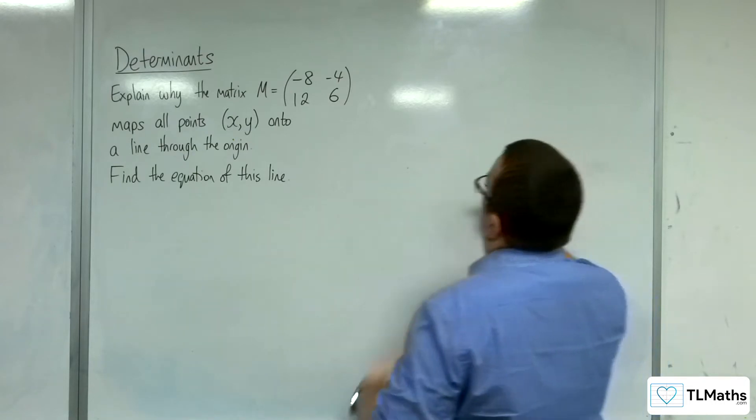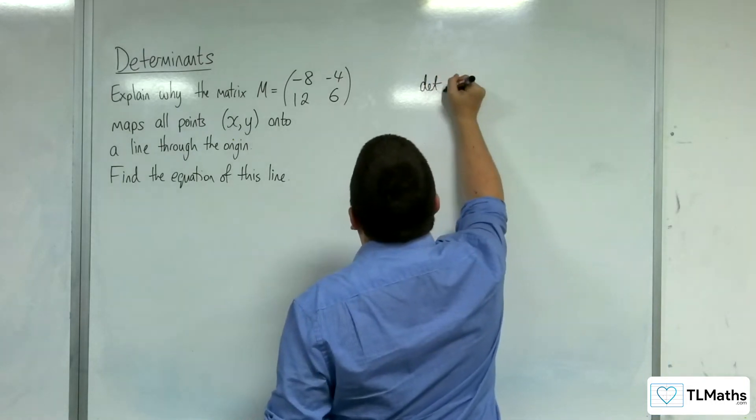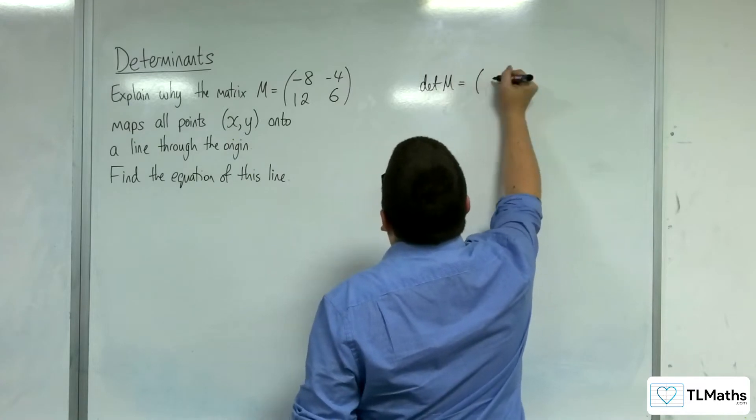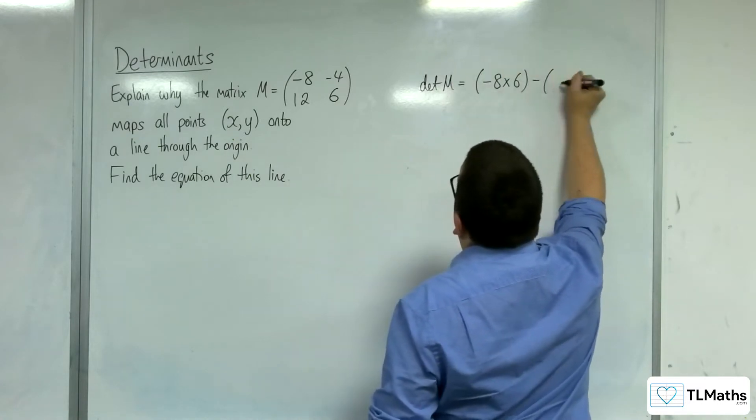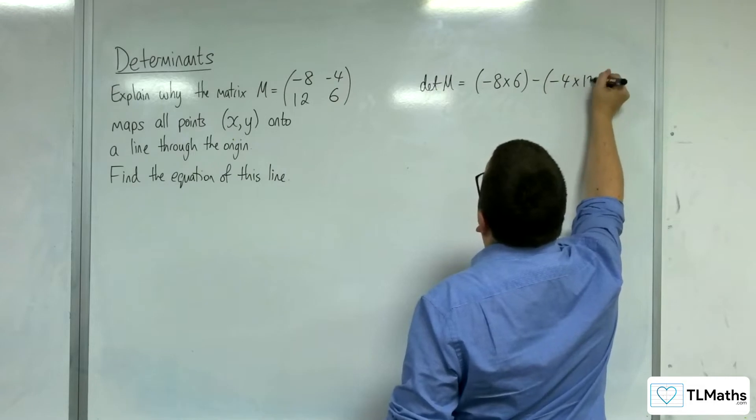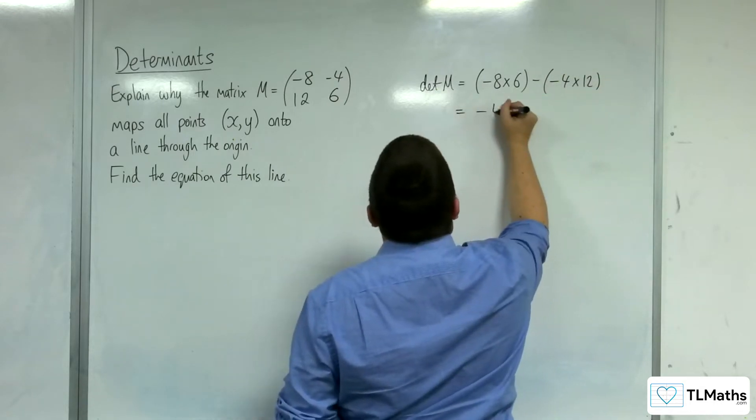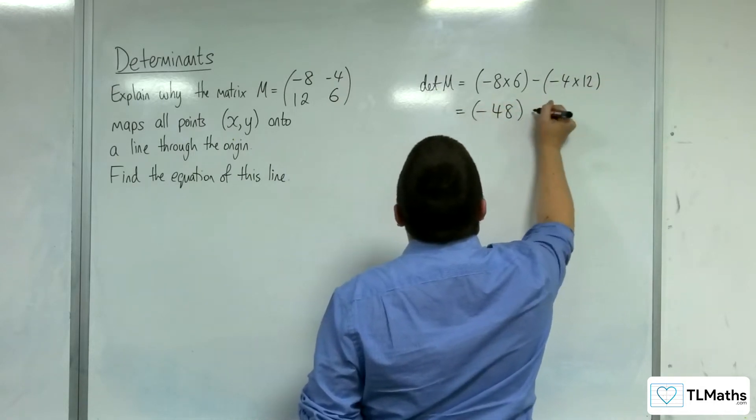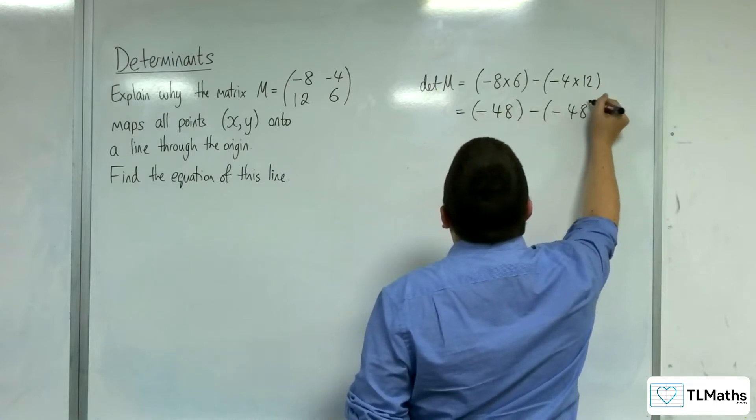Right, so we're going to look at the determinant of the matrix M, which is minus 8 times 6, take away minus 4 times 12. So, we've got negative 48, take away negative 48,